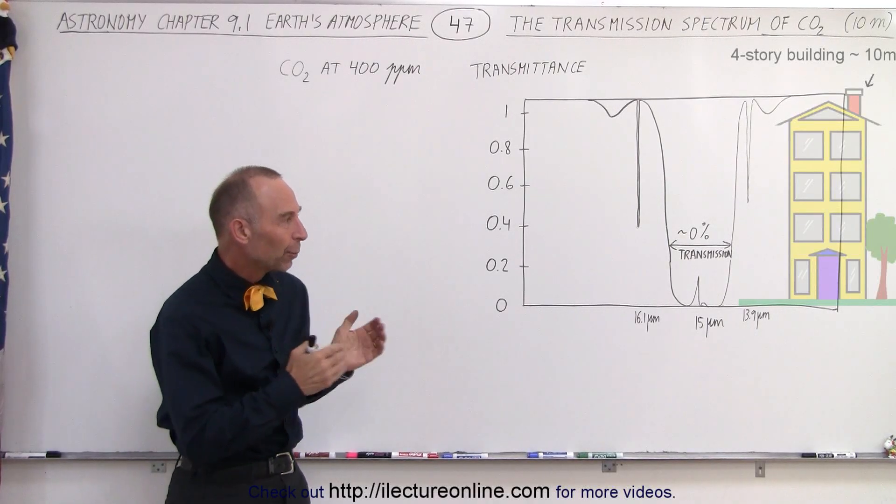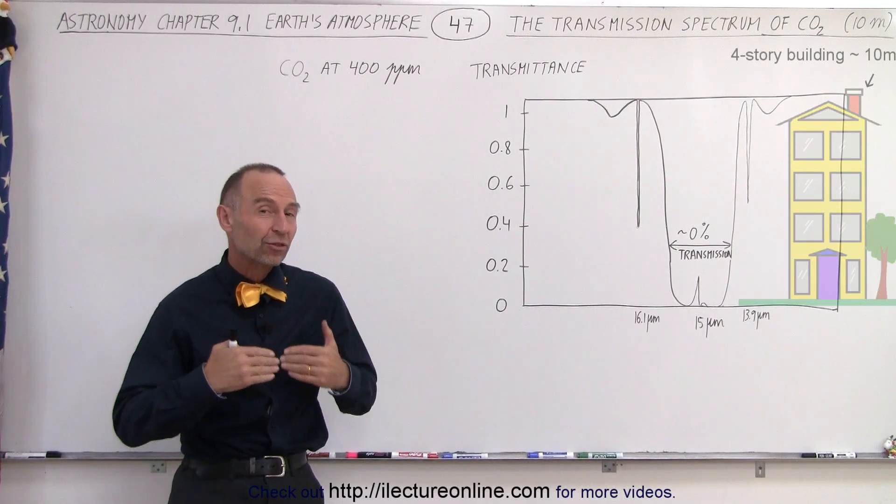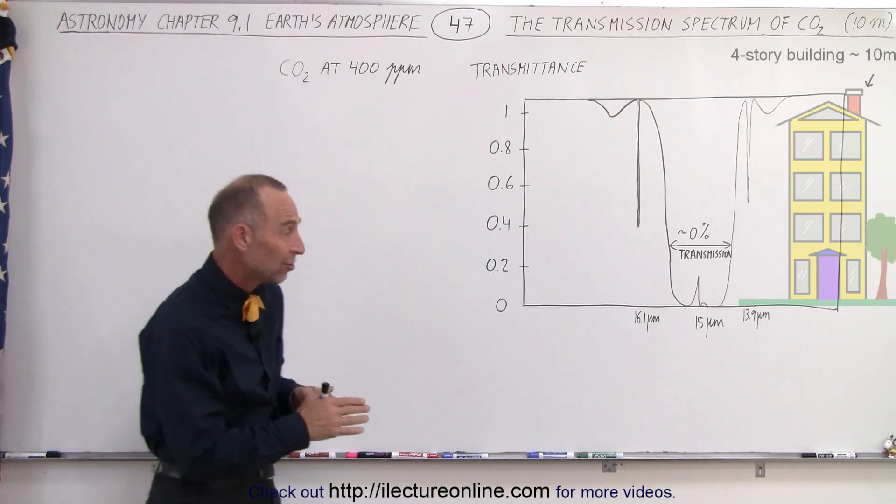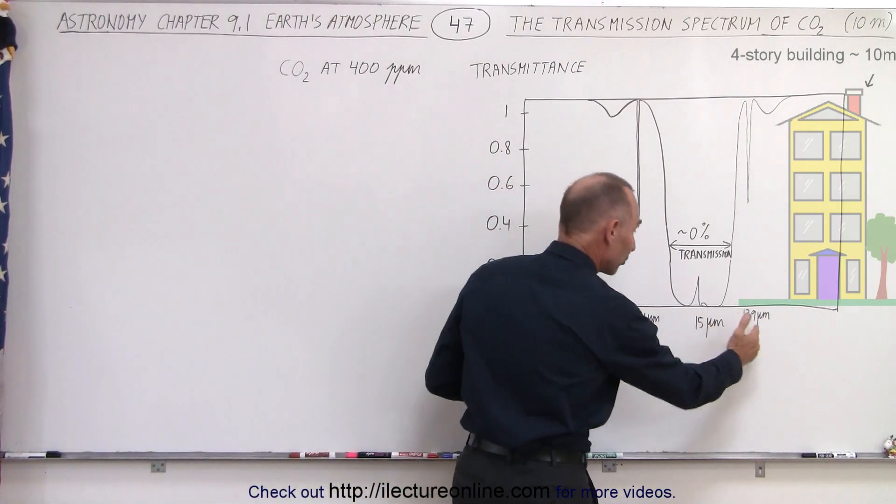Welcome to ElectronLine. Now we're going to take a look and see what the transmission is of the radiation between about 16 and 14 micrometers.